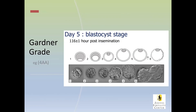The Gardner grading system grades embryos with a number and two letters. The number refers to how expanded the blastocyst is — the early blastocyst just has a small cavity, and as the cavity gets bigger the blastocyst expands, cracks the shell, and starts to hatch when it's a five. When it's fully out of the shell, it gets assigned the number six. The first letter describes the inner cell mass, and the second letter describes the trophectoderm, or the rim of cells around the outside. The scale is ABC, where A is the best.